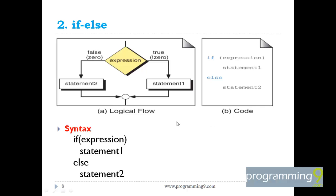Next is if-else. In if-else, an expression is evaluated — if true, statement 1 executes; if false, statement 2 executes. At a time, either statement 1 or statement 2 would be executed, but it is not possible to execute both in parallel or sequentially. Only one is allowed at a time. That is why this is called a two-way decision statement.